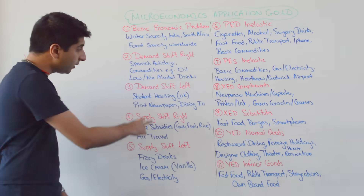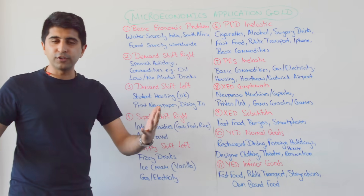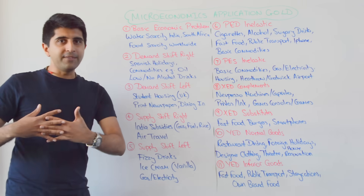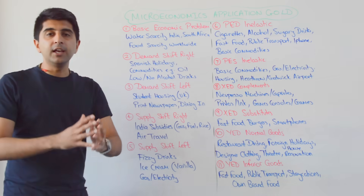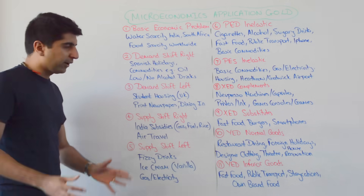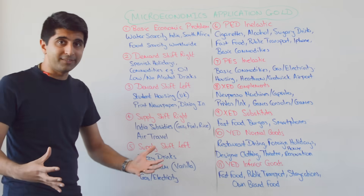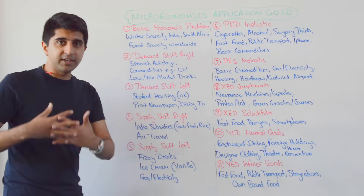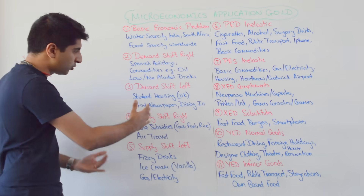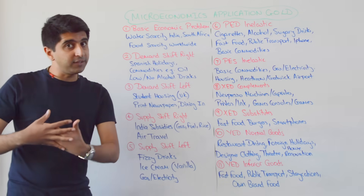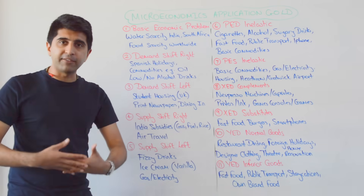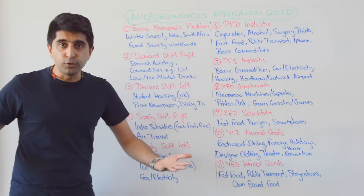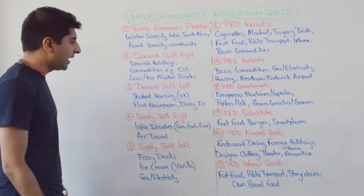What about demand shifting left? Well, less demand for student housing in the UK as the cost of university education is going through the roof. Students are looking at saving money, especially by not living in student housing, finding alternative ways — staying at home and going to local universities instead. Demand for print newspapers is shifting left as we move online. Demand for dining in has also shifted left, as people look at cheaper substitutes like Deliveroo and Just Eat.